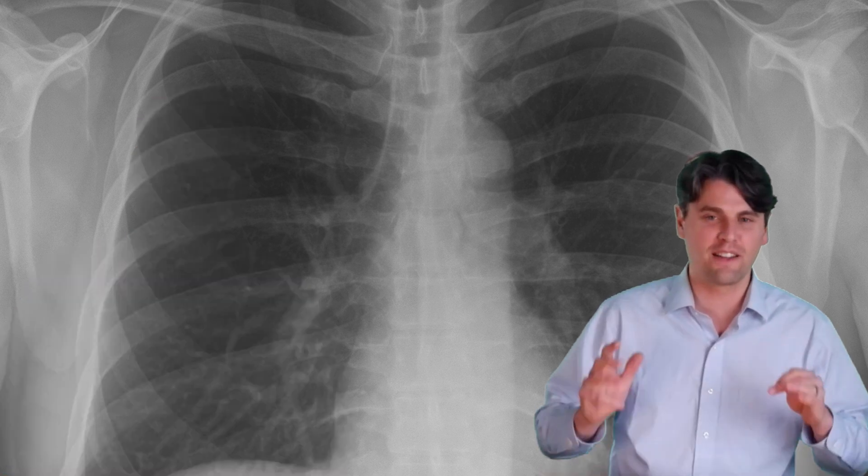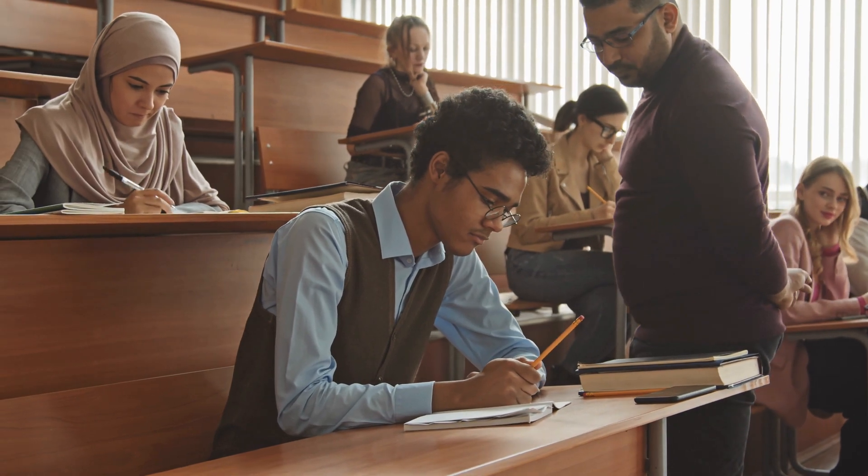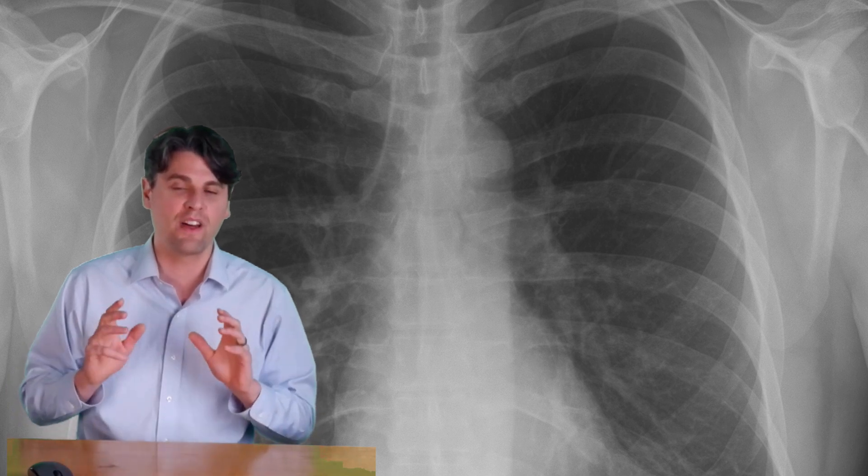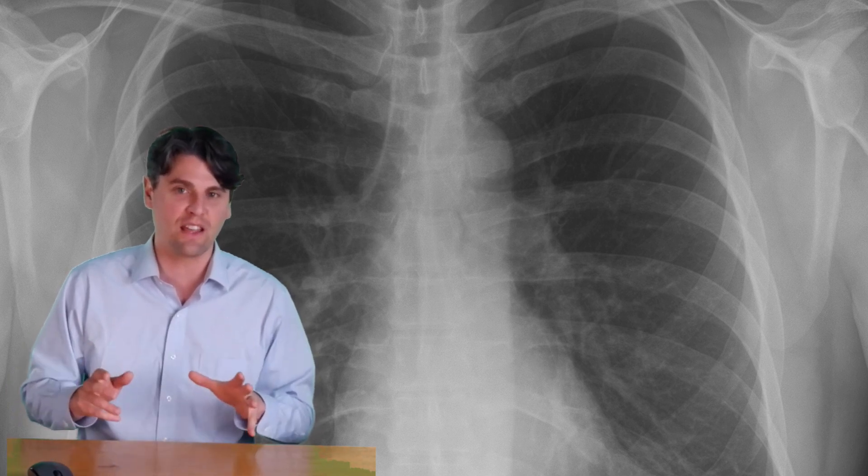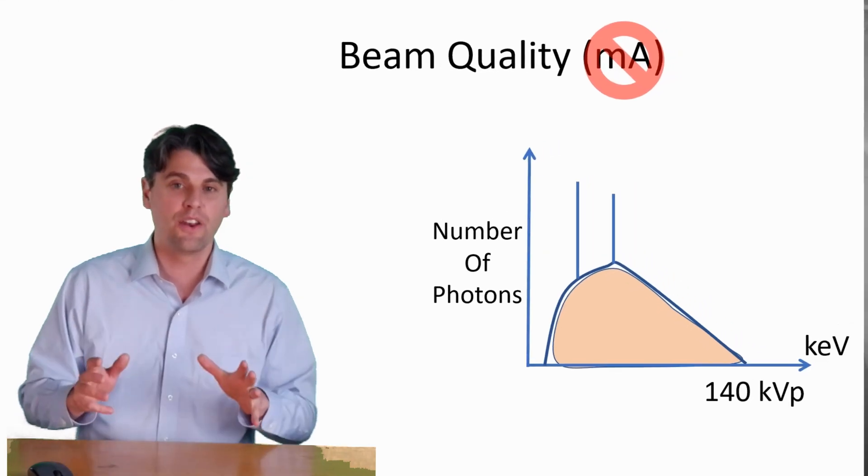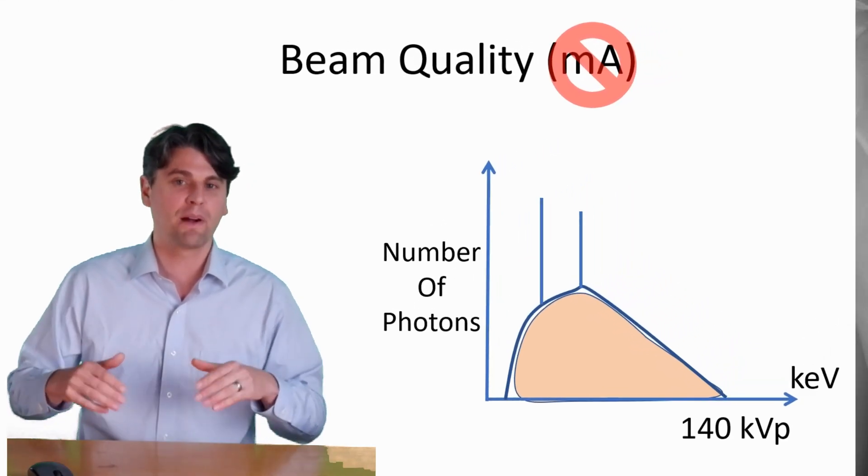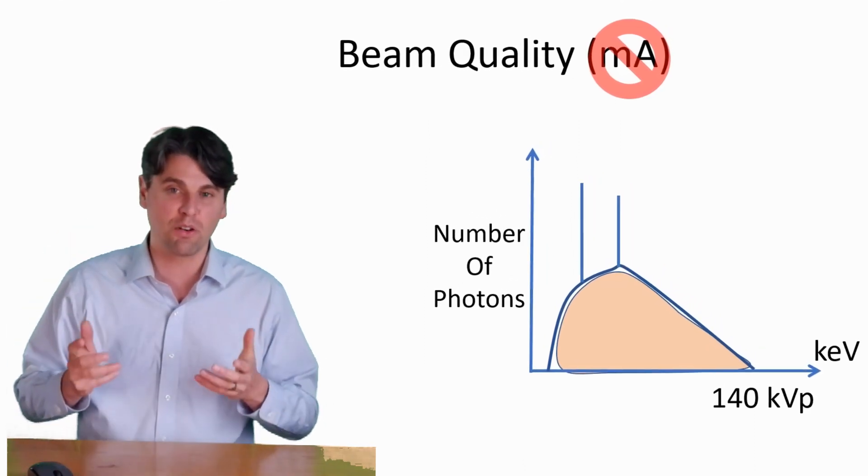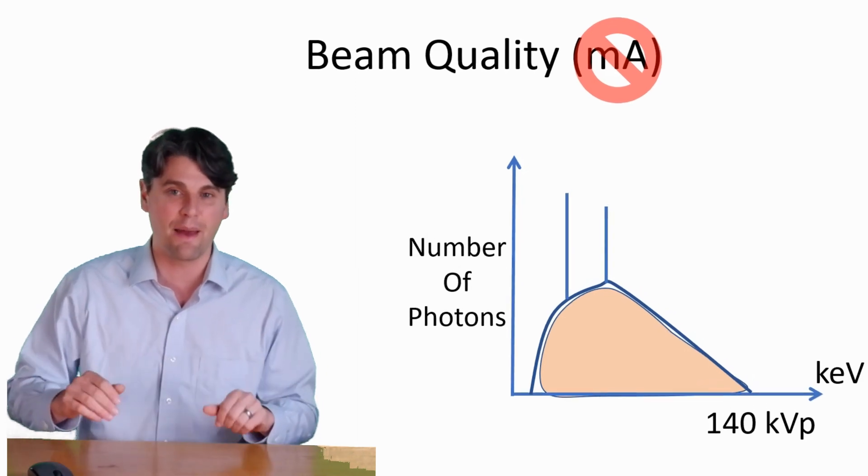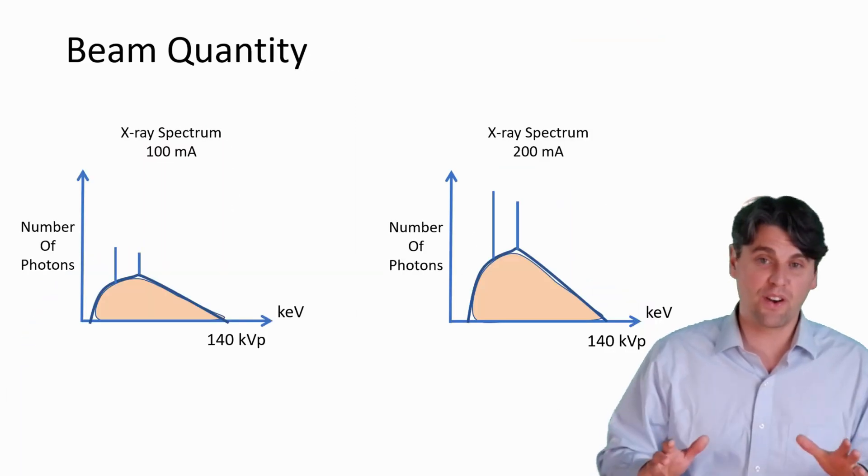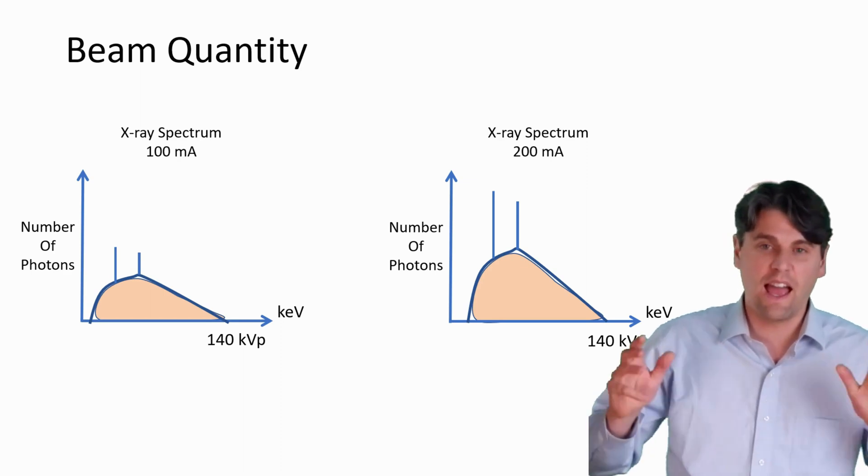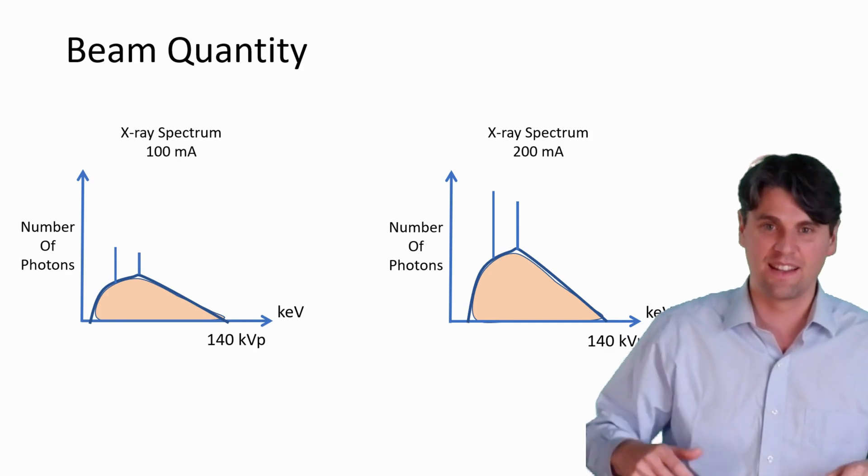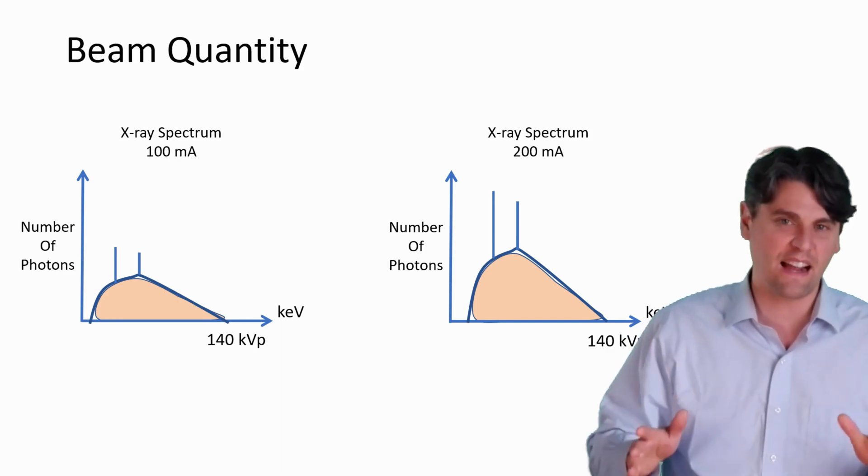The question they love to throw at you on the registry type exam: does MA influence the beam quality? Just ask yourself, will the shape of the x-ray spectrum change if I change the MA? The answer is no. The number of photons will change, but not the shape. You'll be scaling the same distribution either up or down, but its general shape is going to stay the same when you change the MA. Example of two different MAs, 100 MA and 200 MA, and you can see they have the same shape. It's just that the scale has changed. So the beam quality is actually not changed.